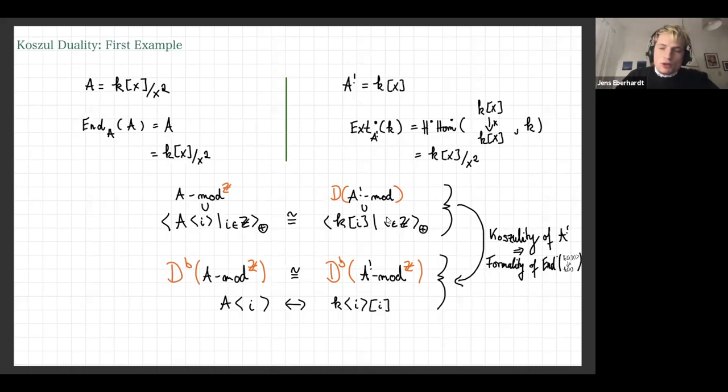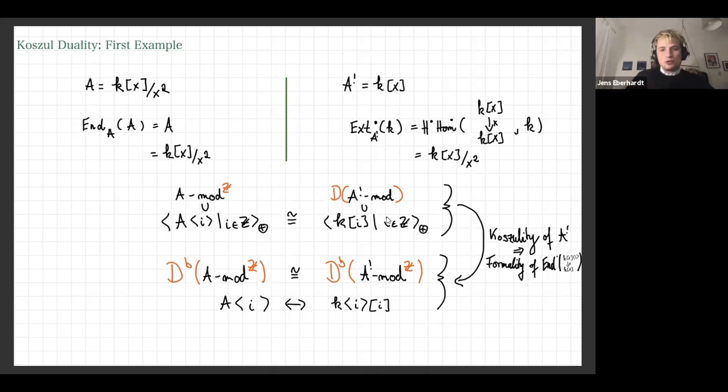You can make this into a derived equivalence between those categories, passing to the graded and derived category on both sides. This equivalence exchanges the object A on the left with k on the right, with the weird property that a shift of grading on the left corresponds to a shift of grading plus cohomological shift on the right. You can then define certain properties of algebras which make this whole thing possible — call those algebras Koszul — and call this equivalence Koszul duality. This generalizes to infinity, but instead we want to look at specific situations in geometric representation theory.